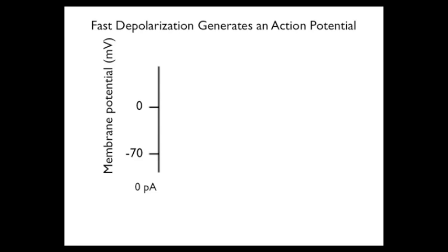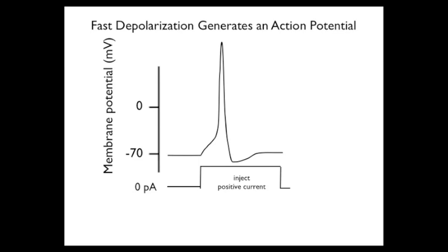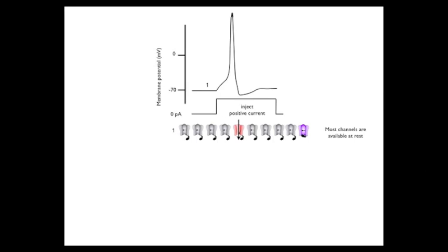Next, let's take an axon and inject positive current that quickly depolarizes it from rest to a much more depolarized level that crosses its threshold for firing and thus evokes an action potential. The threshold is indicated by the red dashed line. At rest, position 1, the channels are flickering where one is open, two are unavailable, but most sodium channels are in the available state and can open when the cell is depolarized.